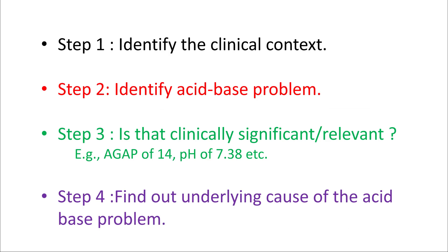There are four steps in reading ABG. First, identify the clinical context. Then identify the acid-base problem. Then figure out if that acid-base problem is clinically significant or relevant. And finally, find out what is really causing that acid-base problem in your patient. You have to perform all four steps when looking at acid-base disorders from an ABG.